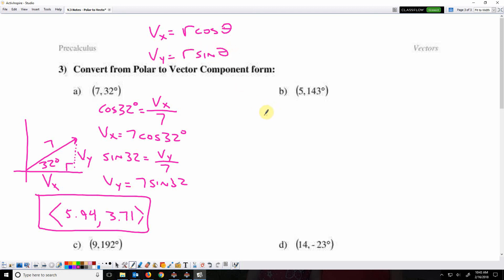So here, the vector's x component is 5 cosine 143, and the y component is 5 sine 143.